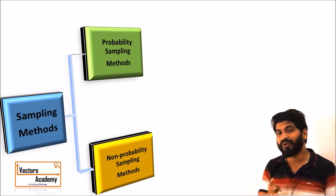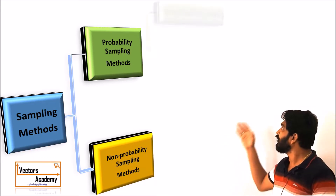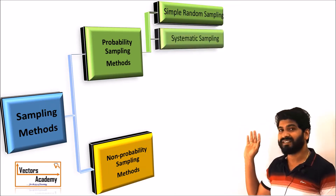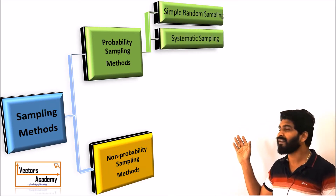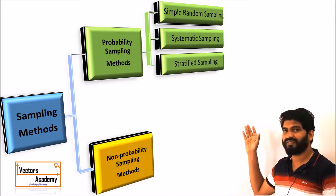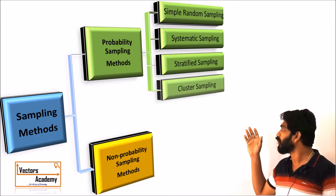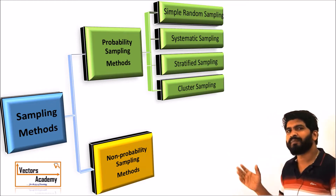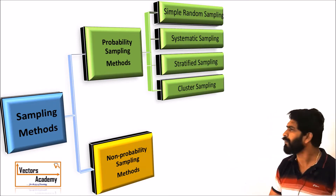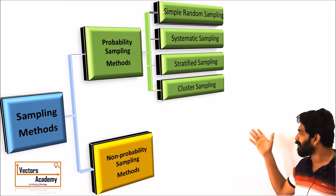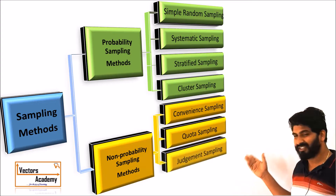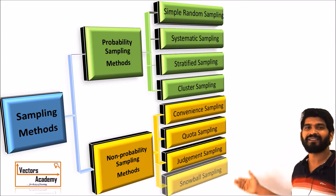Probability sampling has four different types: simple random sampling, systematic sampling, stratified sampling, and cluster sampling. The four types of non-probability sampling are convenience sampling, quota sampling, judgment sampling, and snowball sampling.